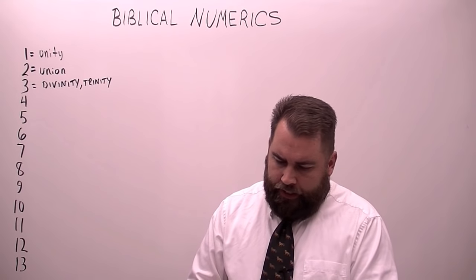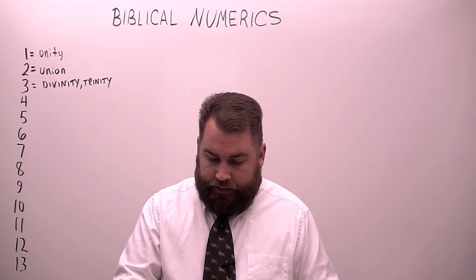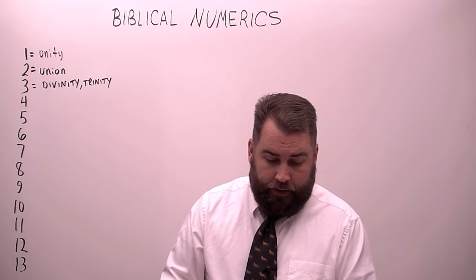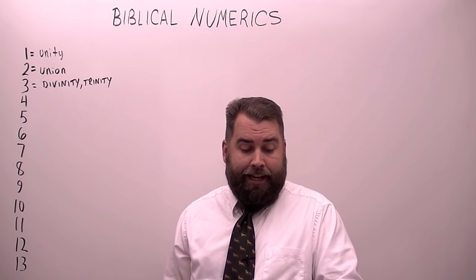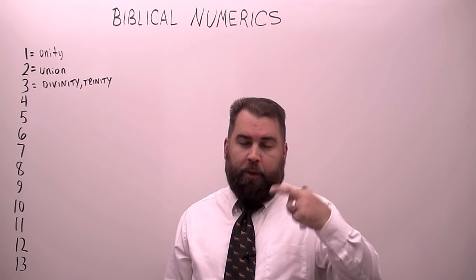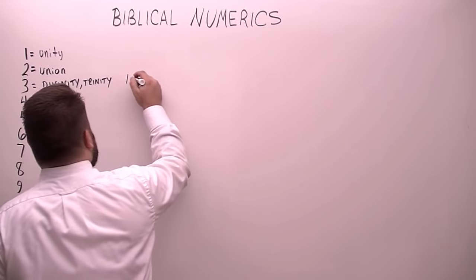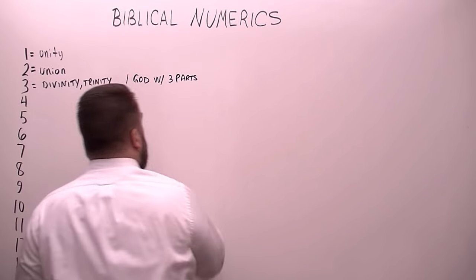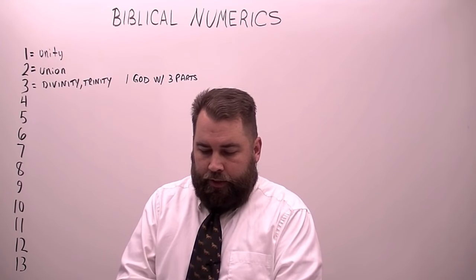In Genesis 1:1 it says, 'In the beginning, God created the heaven and the earth.' In verse 26, God said — 'Let us make man in our image, after our likeness.' Three times God uses a plural: us, our, our. God is a trinity — one God with three parts. And it says God created man in his own image. So let's look at a man. First Thessalonians 5:23 tells us what a man is.